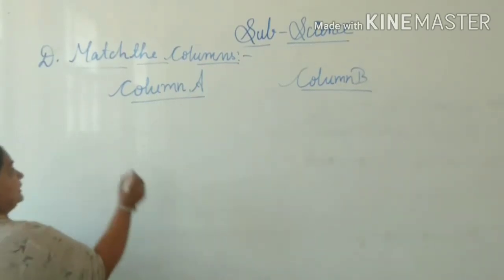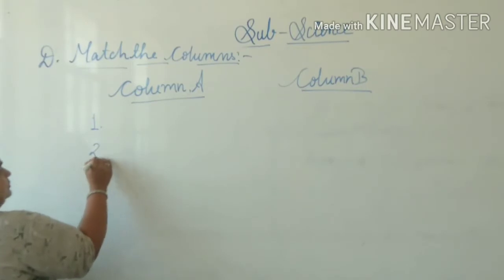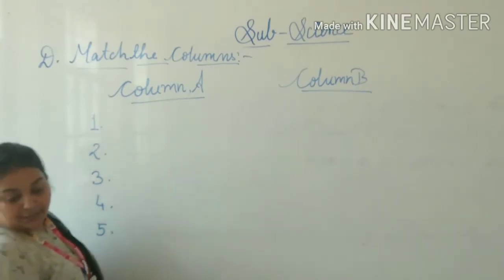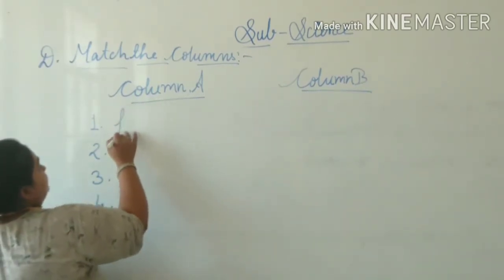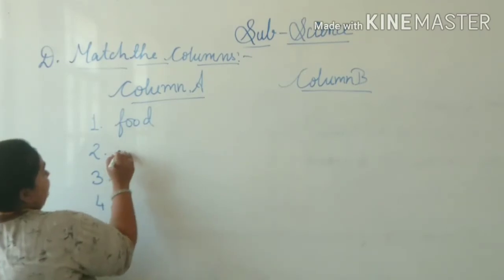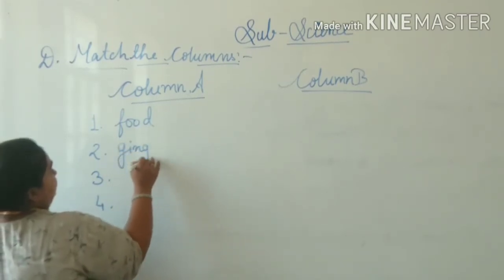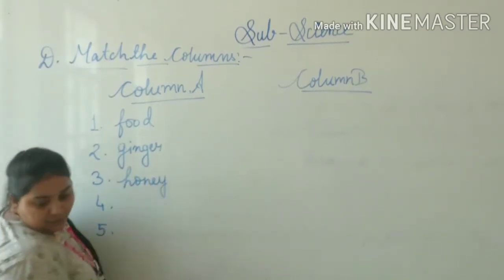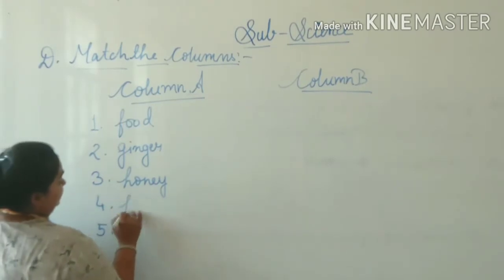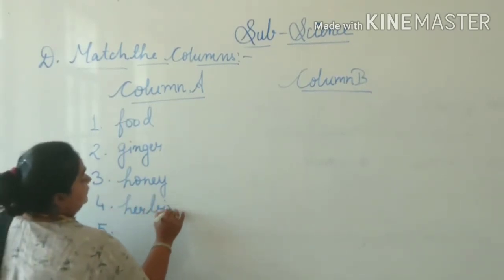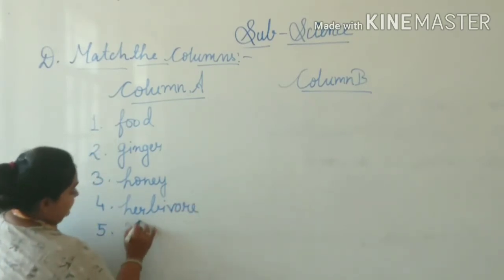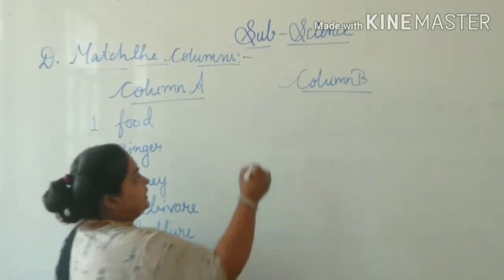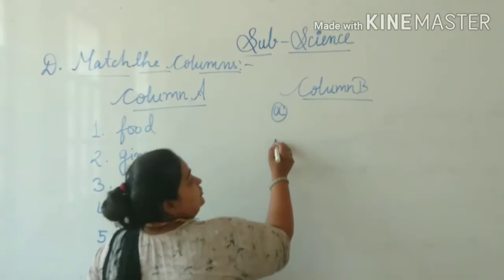Now, in this, what are the headings? You have to write numbers one through five. Number one is food. Second, ginger. Third, honey. Fourth, herbivore. And fifth is vulture. Here also we have five options, and we are going to match them up.